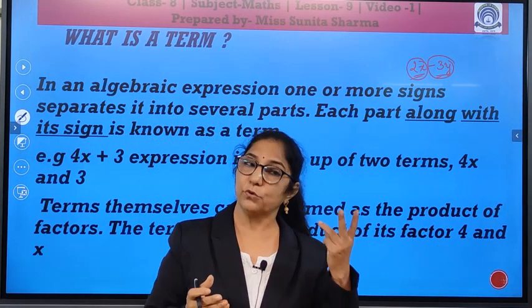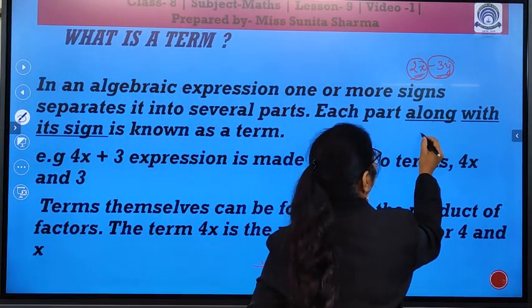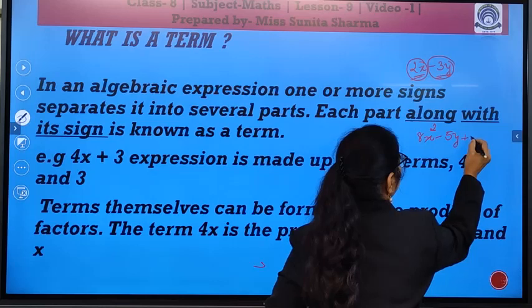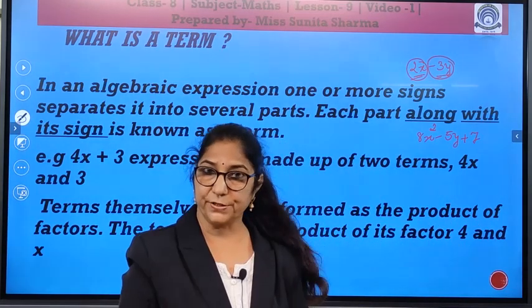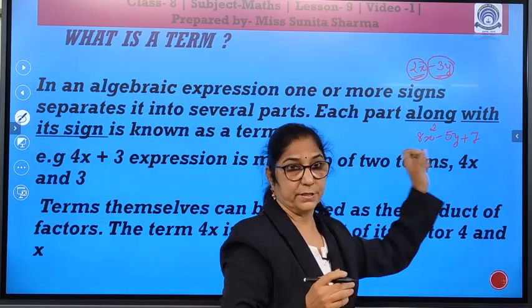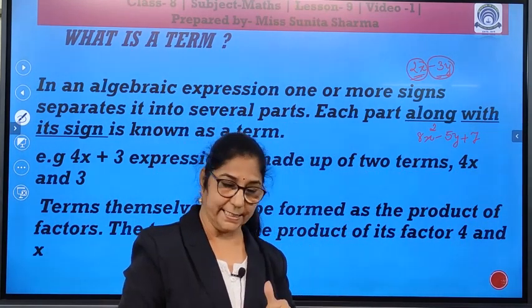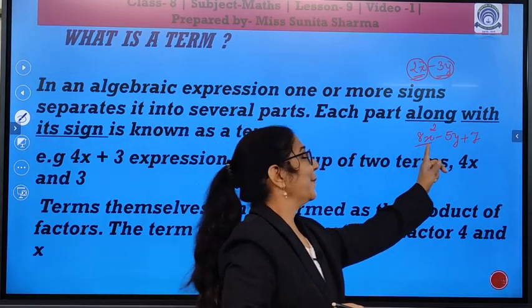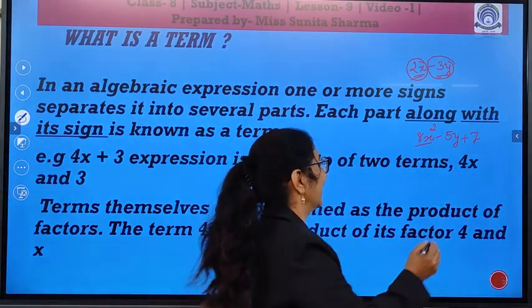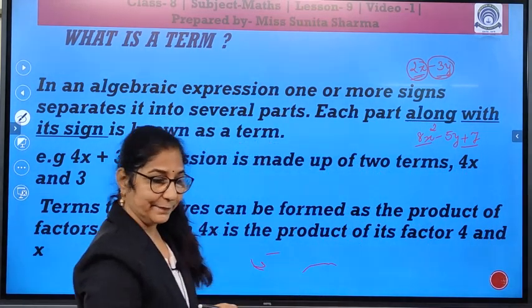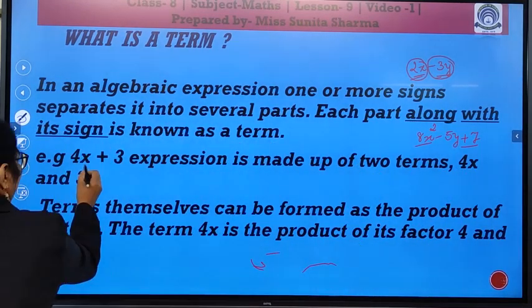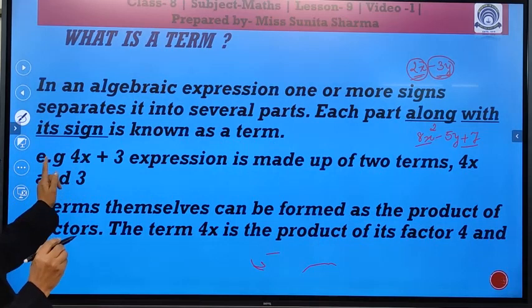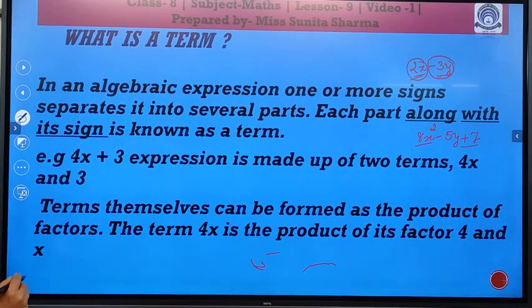Expressions can be of 2 terms. It can be of 3 terms also. I write here, 8x square minus 5y plus 7. It is an algebraic expression. But, it is having 3 terms. Which all are the terms? Can you tell me now? The first one is 8x square. The second one is minus 5y. And the third one is plus 7. Here, it is given 4x plus 3. Expression is made up of two terms. 4x plus 3. There are two terms. 4x and 3.